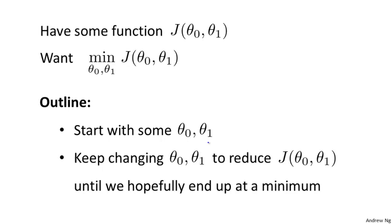So here's the problem setup. We're going to assume that we have some function J of theta_0 comma theta_1. Maybe it's a cost function from linear regression, maybe it's some other function we want to minimize. And we want to come up with an algorithm for minimizing J of theta_0, theta_1.